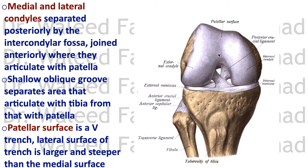This trench surface for articulating with the patella is called the patellar surface. The lateral surface of the trench is larger and steeper than the medial surface. In the knee joint, it's not only the articulation between the femur and tibia — it's also the articulation between the femur and the patella: the femoropatellar joint. Also, the superior tibiofibular joint does not belong to the knee joint but belongs to the knee region. The fibula does not bear any weight from the body because it's attached to the undersurface of the lateral condyle of the tibia.